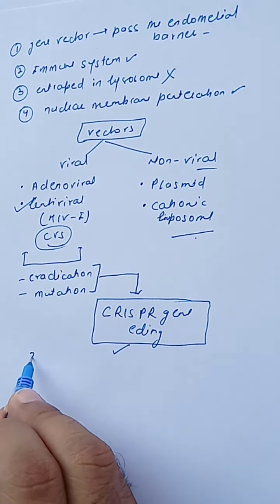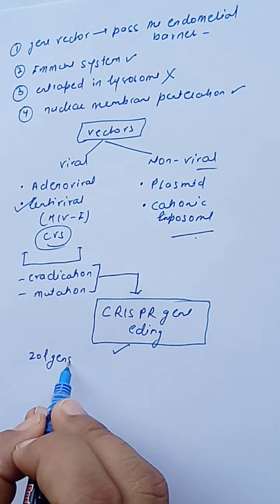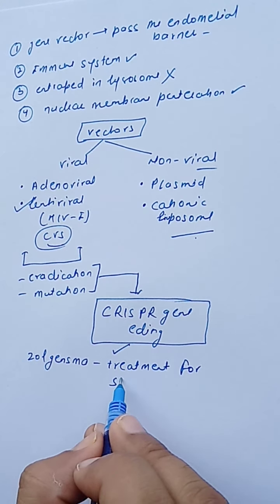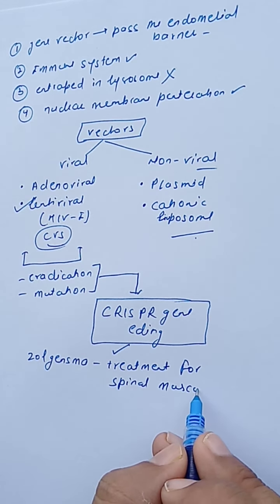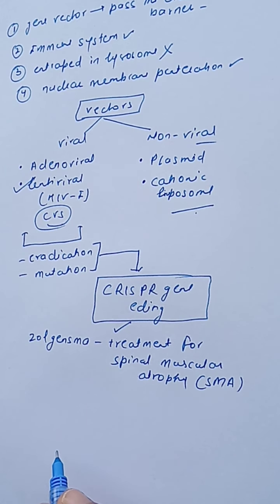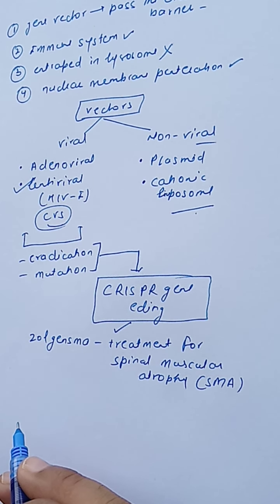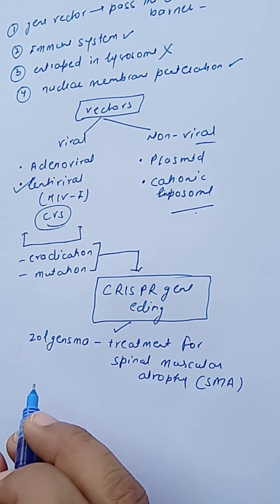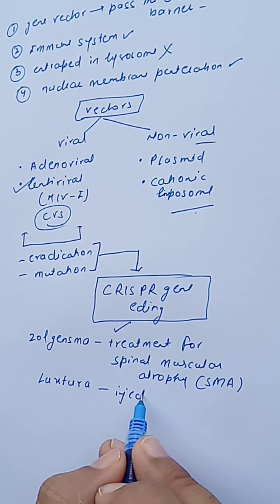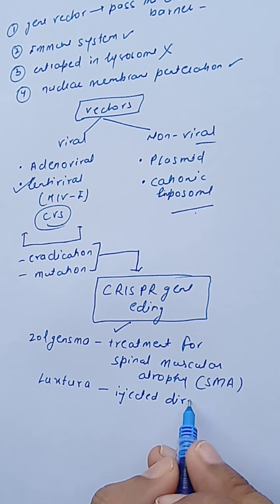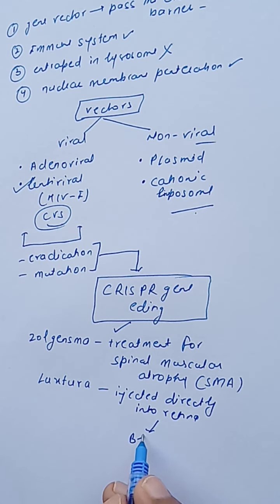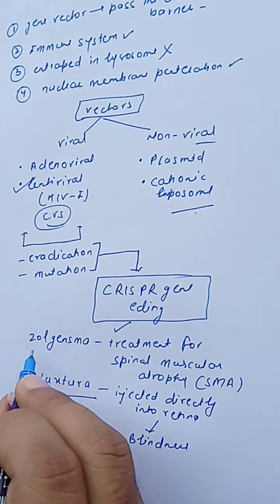Regarding drugs available based on gene transfer: Onasemnogene abeparvovec (Zolgensma) is a gene therapy drug used for the treatment of spinal muscular atrophy (SMA). A major problem with gene therapy is its very high cost. Another available drug is Luxturna, which involves genes injected directly into the retina cells to correct blindness, particularly in children.